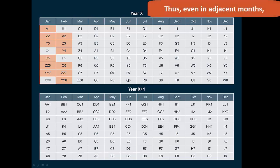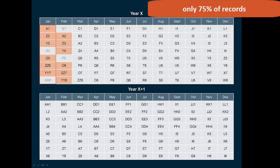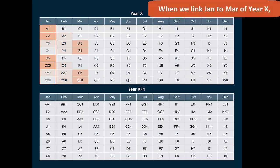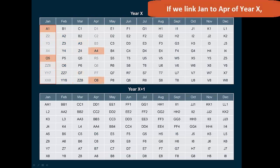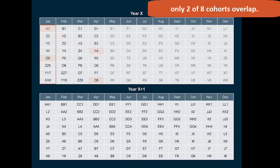Thus, even in adjacent months, only 75% of the records from the focal month will link across months. When we link January to March of year X, only half of the cohorts appear in both months. If we link January to April of year X, only 2 of 8 cohorts overlap.